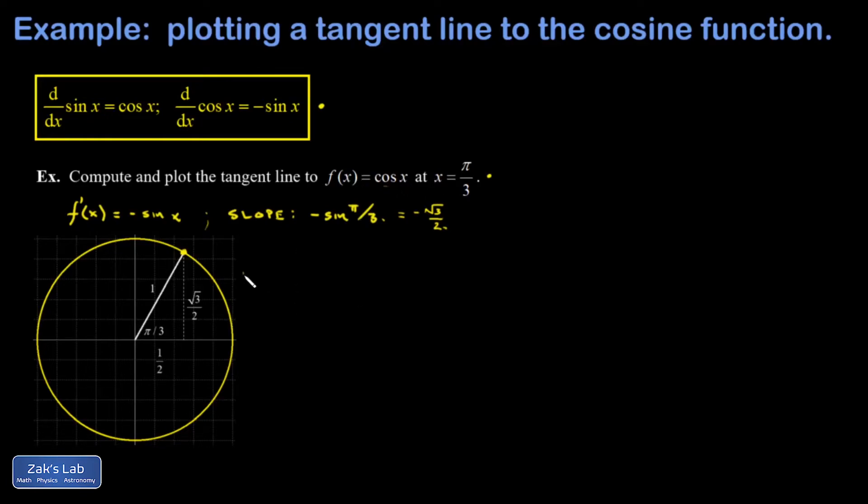So our point, x is pi over 3, I guess I'll go ahead and throw a y in here. Y is going to be cosine pi over 3. And I can see from the picture of the unit circle, that's 1 half, the x-coordinate of this point on the unit circle. So our point is pi over 3, comma, 1 half.